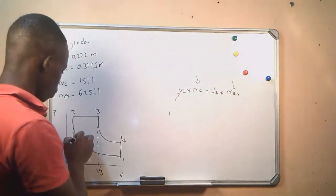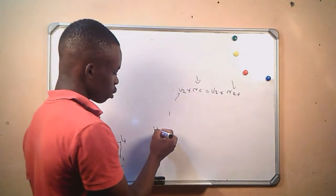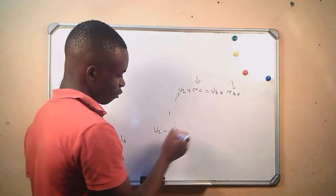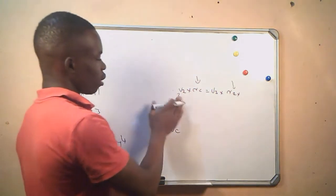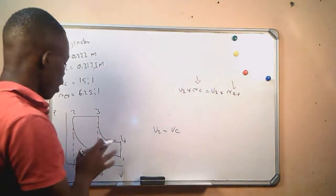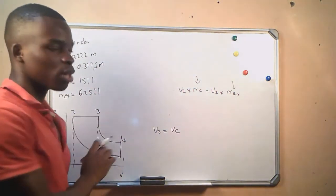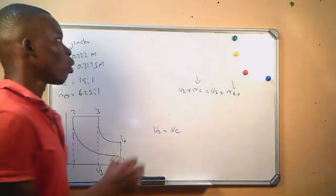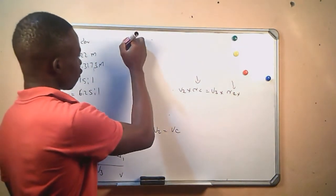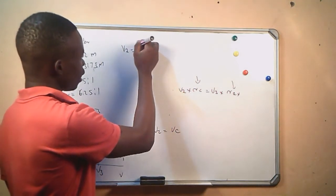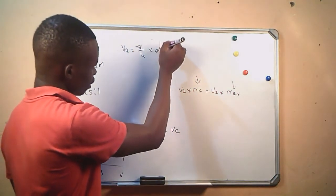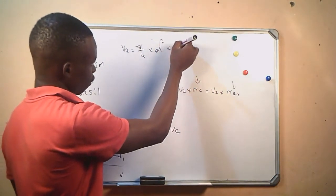V2 equals the clearance volume. When we want to calculate the volumes, we start by calculating the swept volume, which equals π/4 times the piston diameter squared times the stroke length.